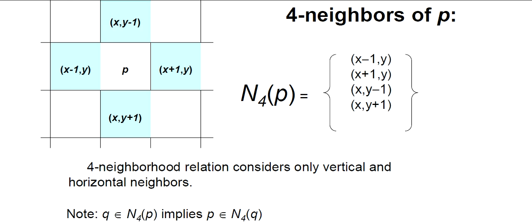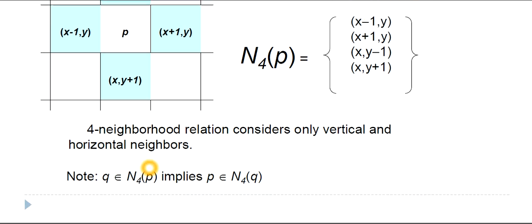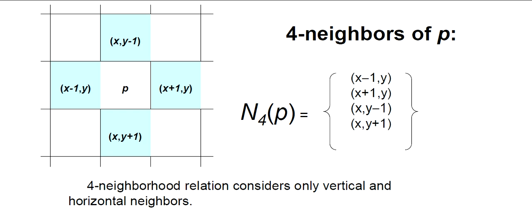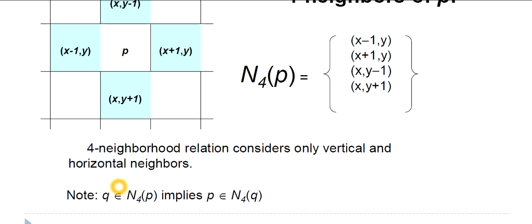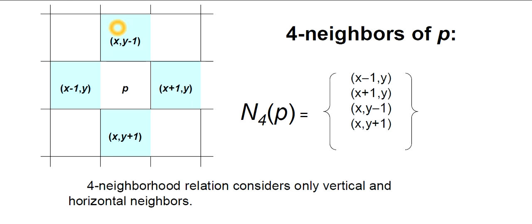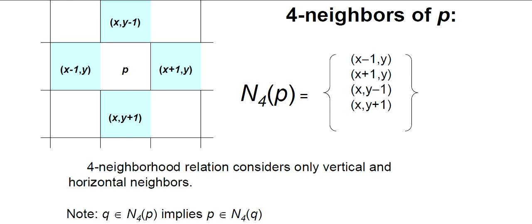An MCQ may come like: four neighborhood relations consider which neighbors? Answer: only vertical and horizontal neighbors. Also note: if Q belongs to the four neighbors of P, then it implies that P also belongs to the four neighbors of Q. This is very obvious — if you look at the diagram, since Q is a four-neighbor of P, you can find the four neighbors of Q and see that P belongs there too.